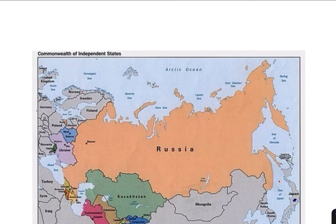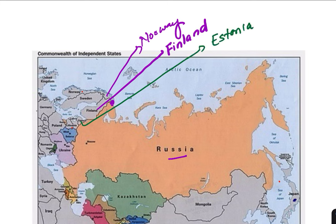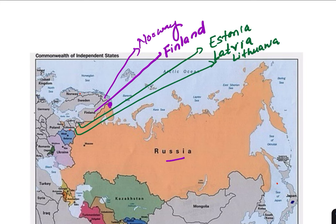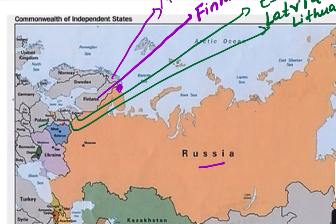Looking at the map will help you remember these countries. We will start with Norway — you can see it sharing the boundary with Russia — then Finland, then Estonia, Latvia, and Lithuania. Russia also shares a boundary with Poland, but if you enlarge the map you will see there is no direct border between Russia and Poland.